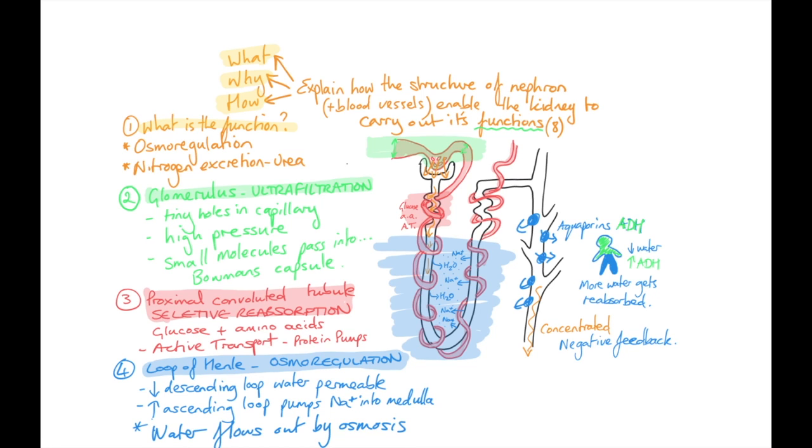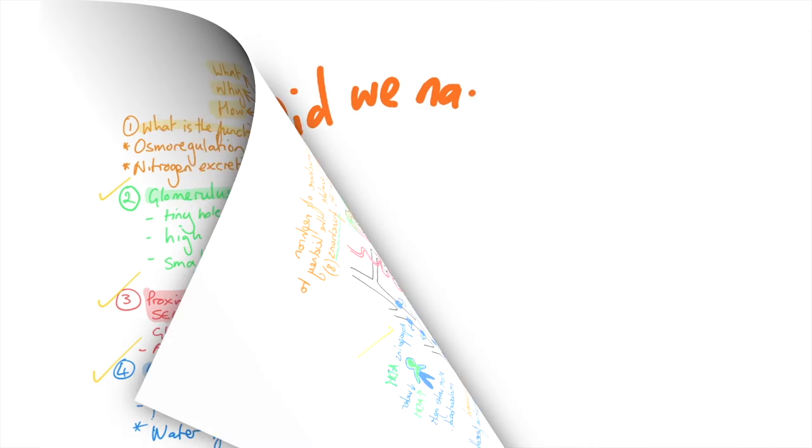Did we say what does the ultrafiltration? Yes, we did. We said glomerulus. And we said how? Tiny little holes, high pressure, small molecules pass into the Bowman's capsule. Then we said about selective reabsorption at the proximal convoluted tubule and osmoregulation at the loop of Henle and at the collecting duct.